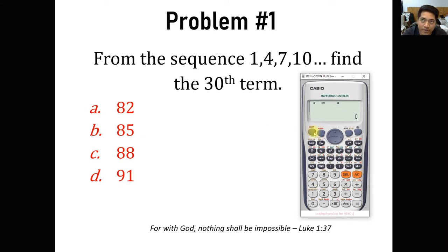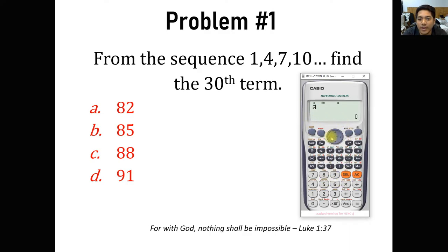Storing the data we inputted: go to shift stat, number 1, then click reg — number 5. Then we enter y-hat, number 5. We are finding the 30th term, so we enter 30, and click equals. We are going to have 88 as our answer.